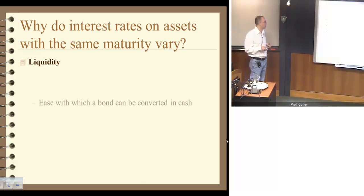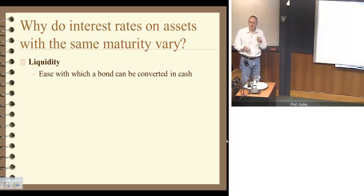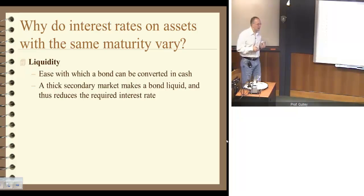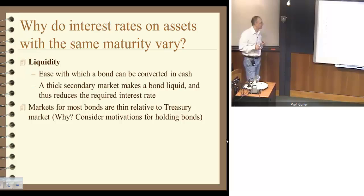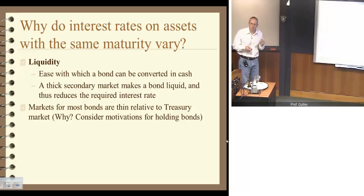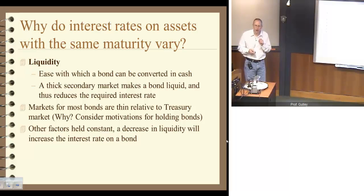There are also differences in liquidity across bonds. Liquidity is a very important concept in financial economics — it's the ease with which any asset can be converted into cash quickly and without losing value. For us, it's how quickly a bond can be sold in the financial market without losing value. If you have a thick secondary market, that means it's relatively easy to sell a bond if you choose. Other factors equal, if the liquidity of a bond decreases, the interest rate will tend to rise, because the holder has to be compensated for the risk of being stuck with that bond.